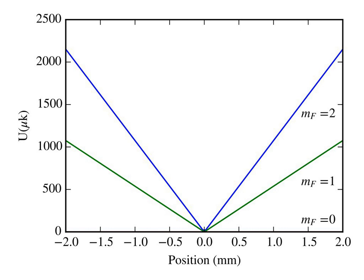RF evaporation: Often RF radiation is used to drive the hottest atoms from the trap. The RF radiation is commonly referred to as an RF knife, because it cuts the hottest atoms out of the trap.